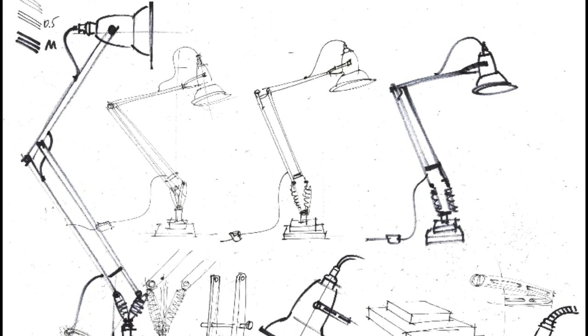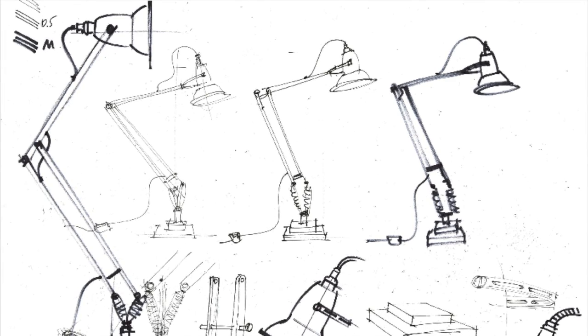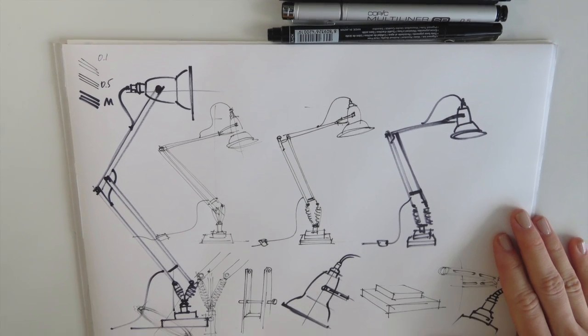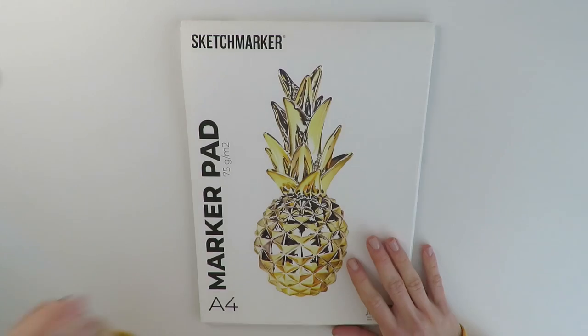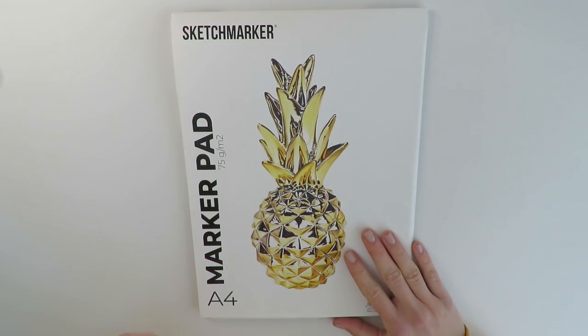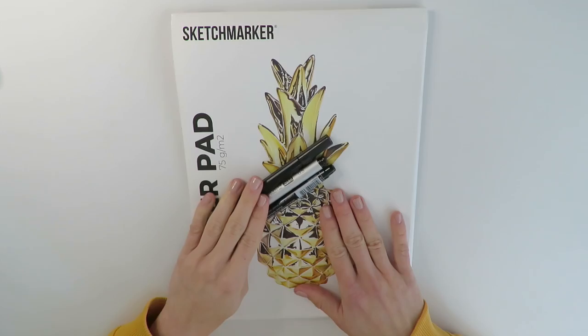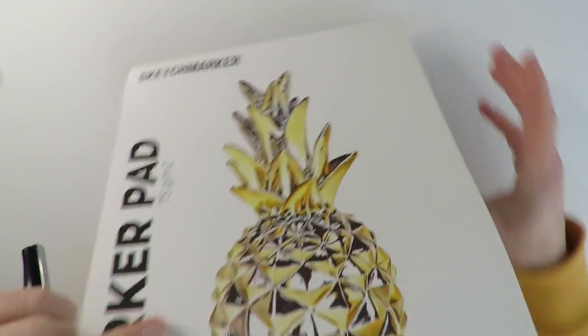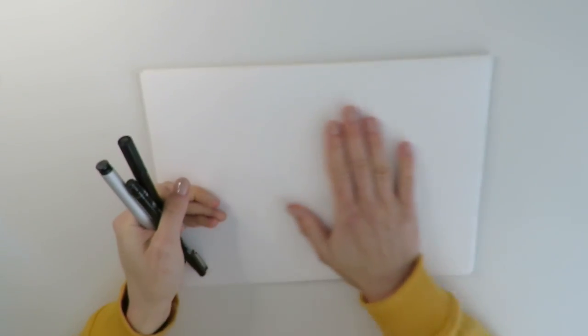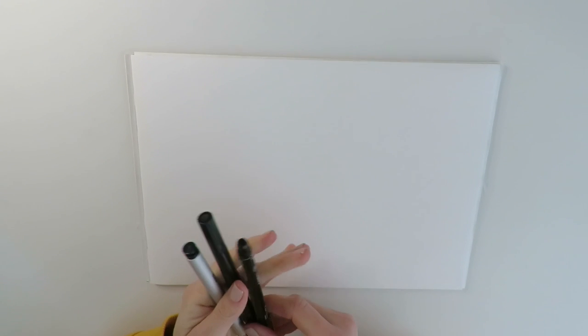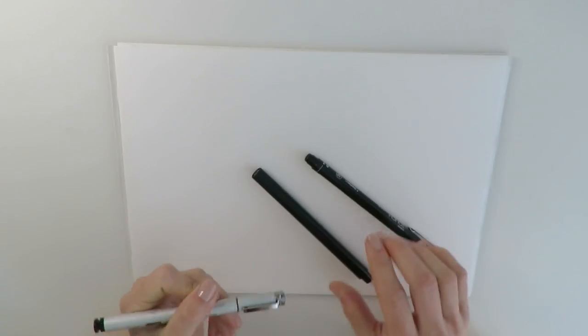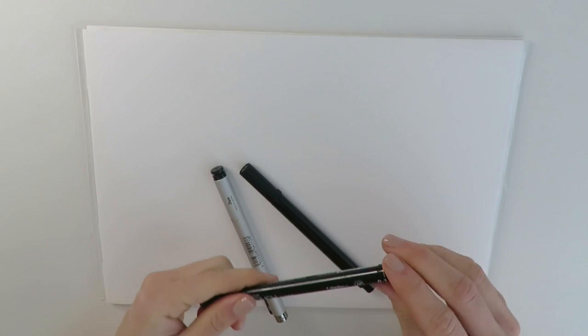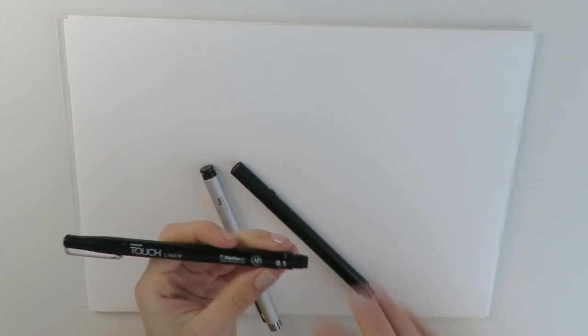We will use a thin, medium and thick pen. In terms of materials for this tutorial you will need an A4 format piece of paper. I will be using a marker pad plus you will need three black liners. One of them should be really thin. For example I will be using 0.1 black liner from Touch Brand.